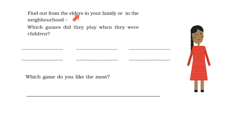Find out from the elders in your family or in the neighborhood which games did they play when they were children. So Sita asked the elders in her family to find out the games that they played when they were children. Chess, Kabaddi, Ludo and Marbles were some of the games that they had played. Now you can ask the elders in your family or in your neighborhood to find out the games they played when they were children and write them here.